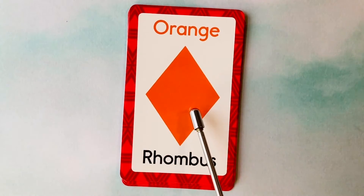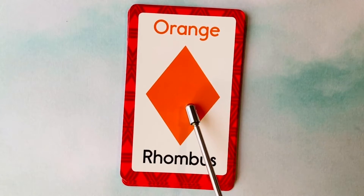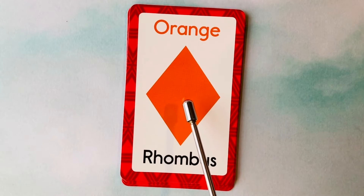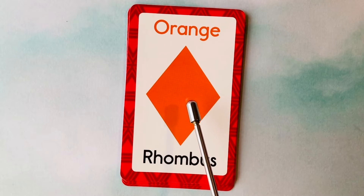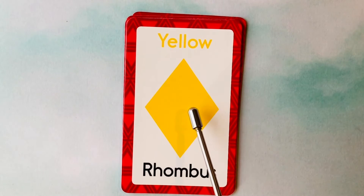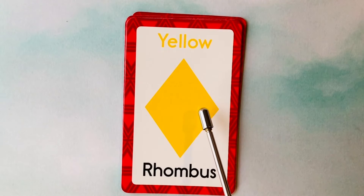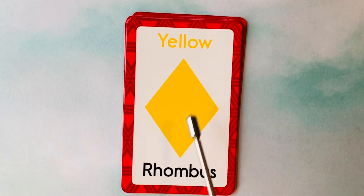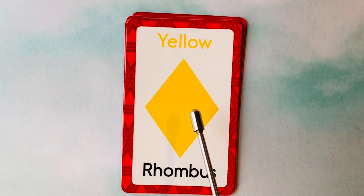This is a rhombus. What color is this rhombus? It's an orange rhombus. This is an orange rhombus. This is also a rhombus. What color is this rhombus? It's a yellow rhombus. This is a yellow rhombus.